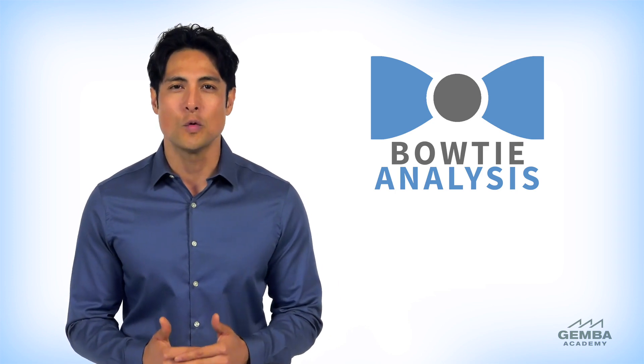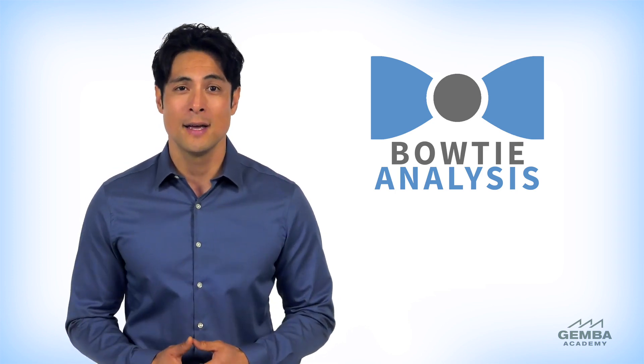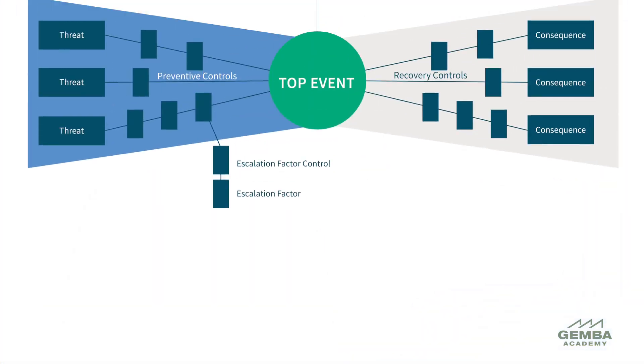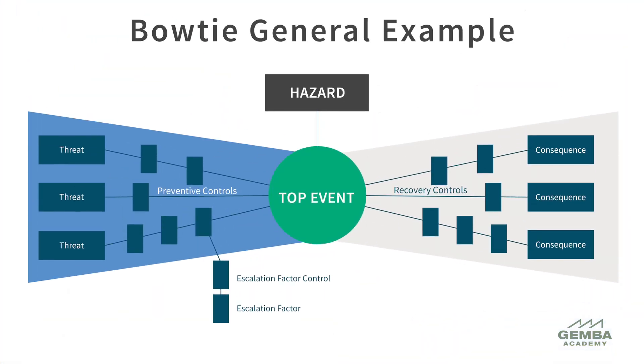Bowtie analysis is a highly visual way to introduce risk analysis and can be made as simple or as complicated as you like. The name comes from the distinctive bowtie shape of the diagram.